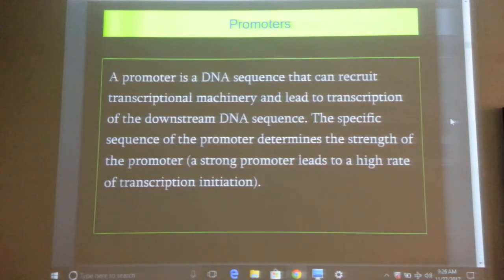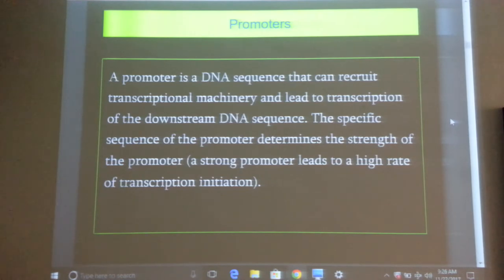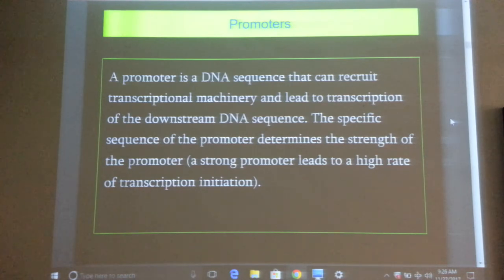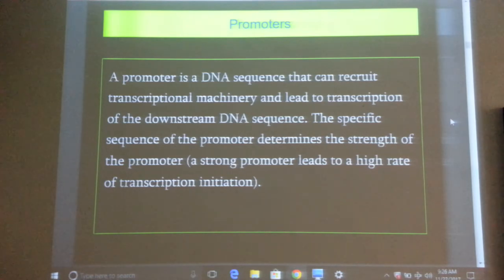When you want to construct a promoter, do you need to buy a part from the parts registry? A promoter is a short piece of DNA — maybe 20 to 40 bases — just a promoter binding site. All you do is synthesize two primers, put them in a PCR tube, and fuse them together by annealing and denaturation. You can synthesize up to 60 bases by PCR, which is cheaper. If you ordered a promoter from the registry, it's more expensive because the minimum order size is about 200 bases. So it's easier to synthesize two oligos and join them together in a PCR tube.